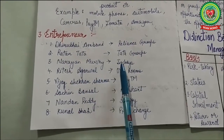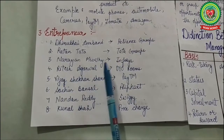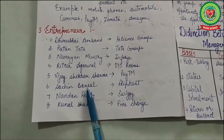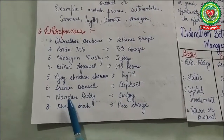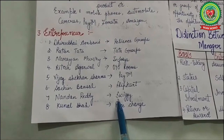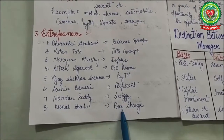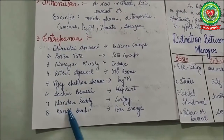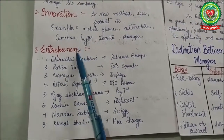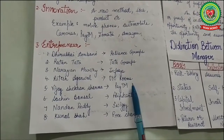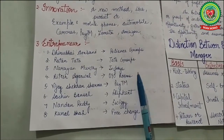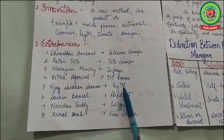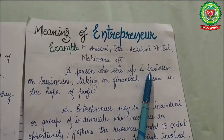The next term is entrepreneur. Examples include Dhirubhai Ambani, founder of Reliance Group; Ratan Tata of Tata Group; Narayan Murthy, founder of Infosys; Ritesh Agarwal for OYO Rooms; Vijay Shekhar Sharma for Paytm; Sachin Bansal for Flipkart; Nandan Reddy for Swiggy; and Kunal Shah for FreeCharge. These personalities are called entrepreneurs, as they produce and innovate something new for customers.